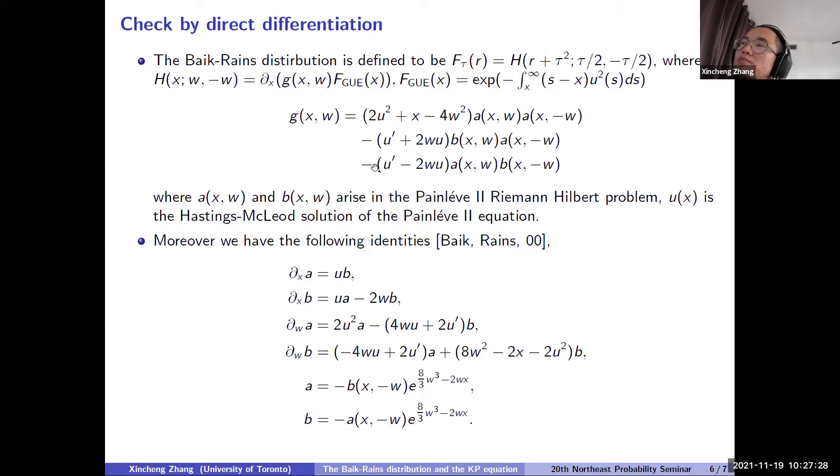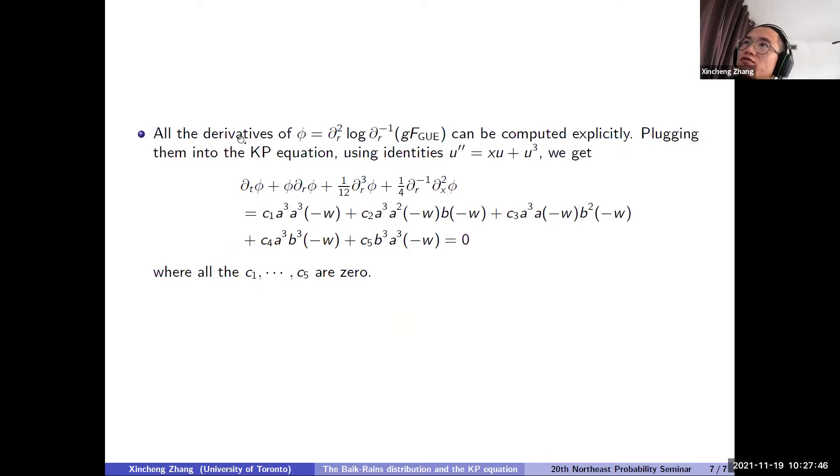Okay. So from this slide, we can see that we have an explicit definition of the Baik-Rains distribution given by G and F. So both G and F are just functions of U,X,W,A,B. And then we know the differentiation rule for A and B, which means all the derivatives of this φ can be computed explicitly. So if you compute all the derivatives of φ using the information from the previous slides, and you plug them into the KP equation. And then you keep using the information that U is the solution of the Painlevé II.